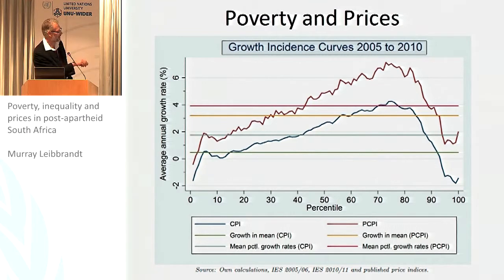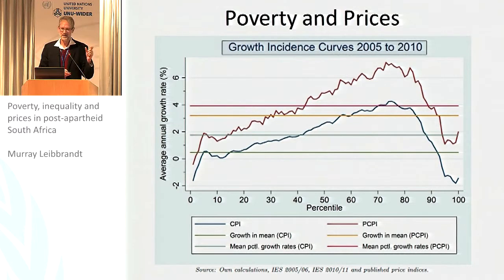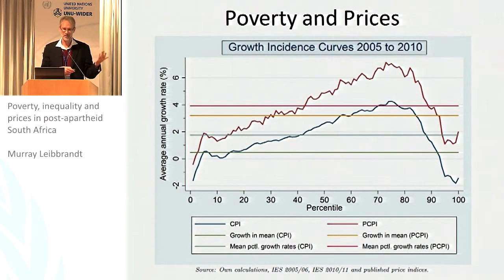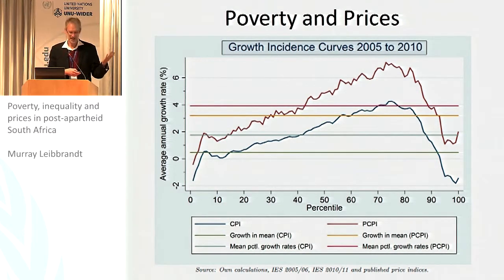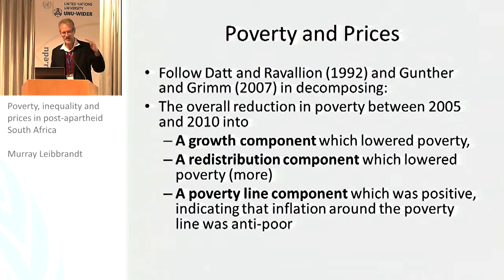You can see that very clearly in the growth incidence curves. The blue is the CPI growth incidence curve; the red is the percentile-specific growth incidence curve, and it's much higher. But then the key question is: how much of that increase in expenditures actually represents increased well-being, versus how much is just the price effect — which is not a good thing at all. We do two exercises to distill out the price effect.